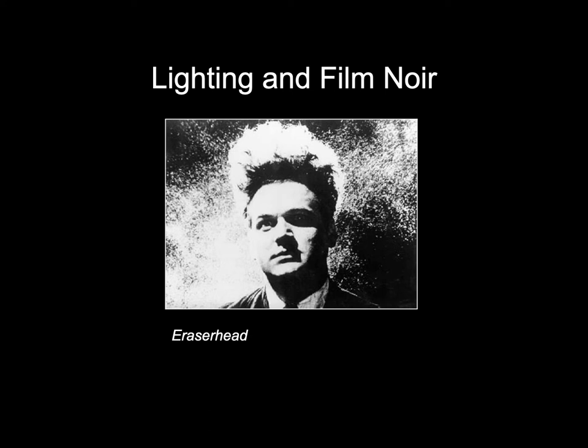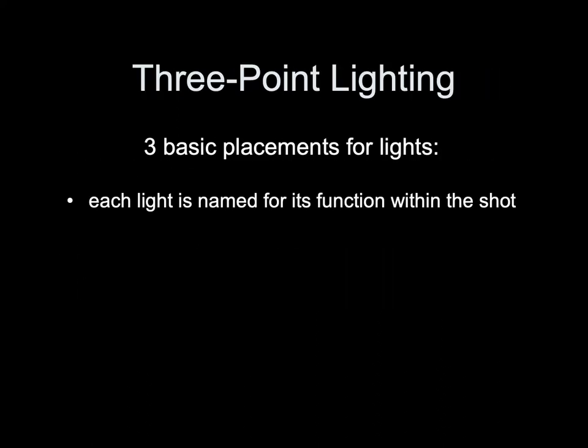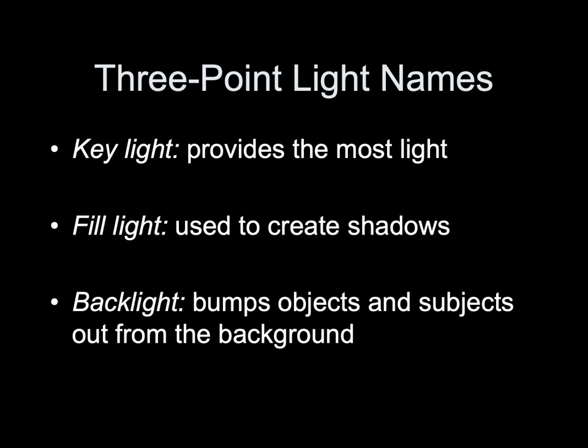Lighting and Film Noir. The cinematographer creates and controls the quality of a film's lighting. We begin with a basic three-point lighting plot. Three-point lighting has three basic placements for lights, each named for its function within the shot: the key light, which provides the most light; the fill light, used to create shadows; and the backlight, which bumps objects and subjects out from the background.